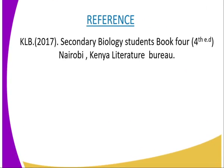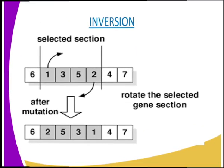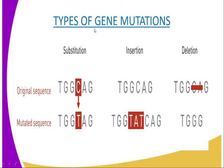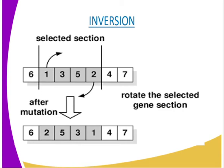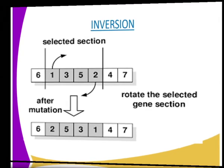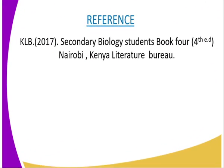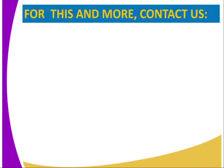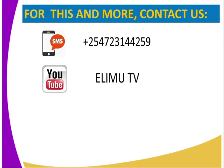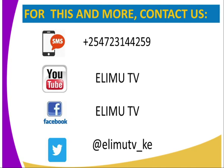So those are the four types of gene mutations — substitution, insertion, deletion, and inversion. Having learned that, you are required to identify the four types of gene mutation as an activity. For more on this lesson, you can refer to our KLB Secondary Biology Students Book 4, fourth edition, Kenya Literature Bureau. For this lesson and many more biology lessons, you can send us an SMS through the number on our screen, subscribe to our YouTube or Facebook page, both ELIMU TV, or tweet us at ELIMU TV underscore Kenya. Subscribe to all these channels to enjoy many more of our biology lessons.